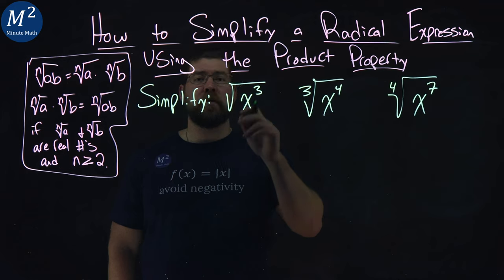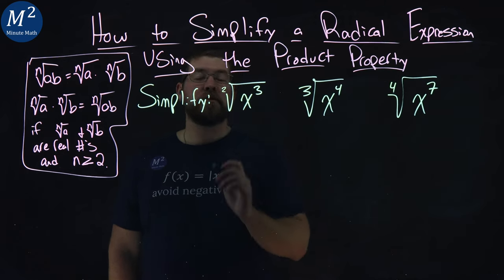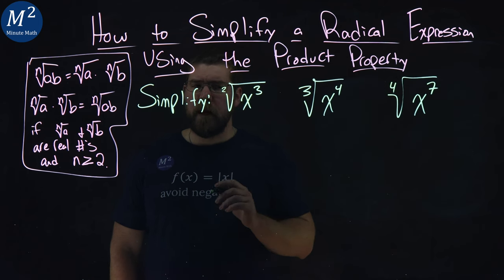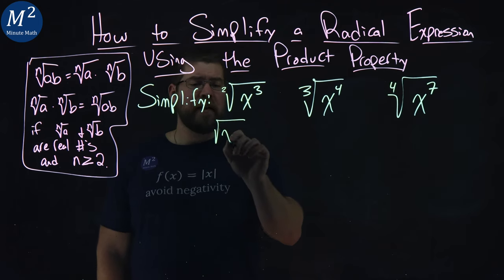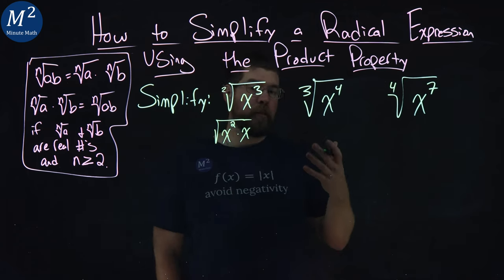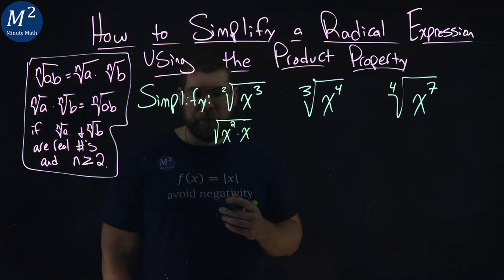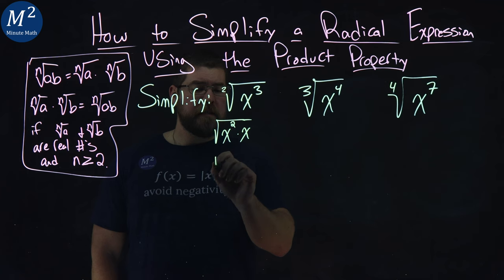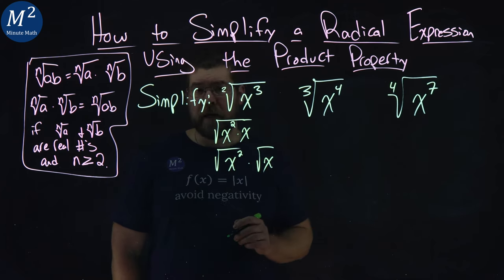We have the square root of x to the third power. Remember, square root has like a little two right there. So if I want to break this up, the square root of x to the third power is the square root of x squared times an x. I'm looking for a perfect square here to separate with multiplication because I know that will cancel. Now, product property states that we can take the square root of x squared times the square root of x.